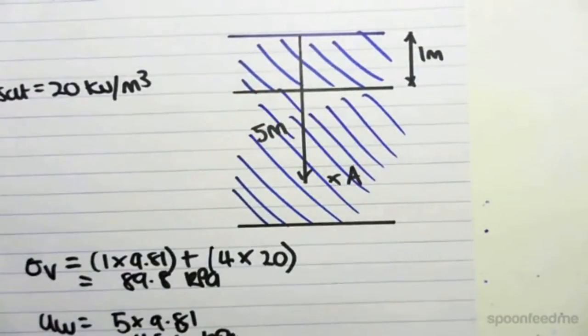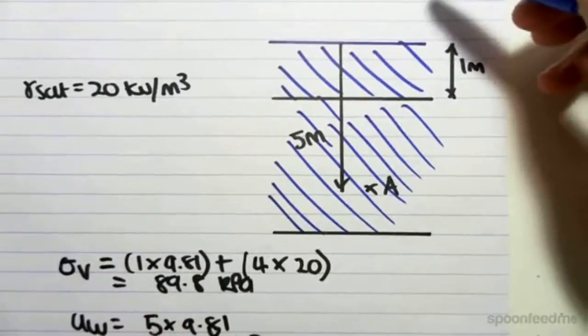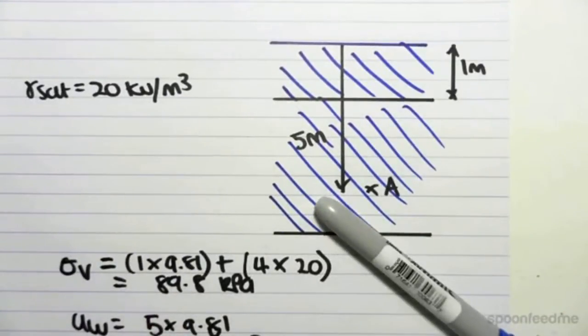And also, the sigma v is not only the weight of the soil, but we've got 1 meter of water on top of that as well. I hope that helps, guys.